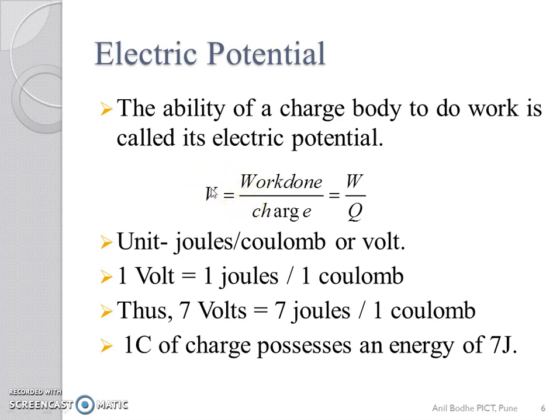Mathematically, it is expressed as electric potential V equal to work done over charge. The work done is measured in Joules and charge is measured in Coulomb. Therefore, the unit of electric potential is Joules per Coulomb or Volt.